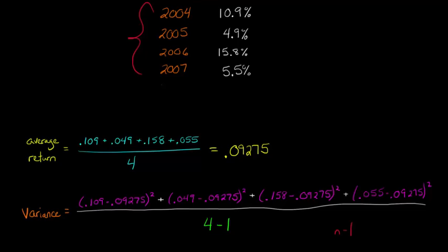Why? Because we don't know the actual expected return. What we're doing really here is sampling. So I don't want to go into all the statistics and everything, but suffice it to say that we lose one degree of freedom here, and so we have to subtract 1 from the denominator.